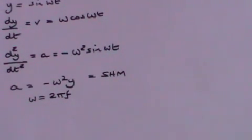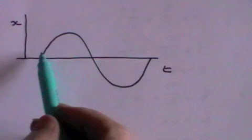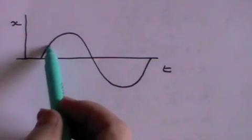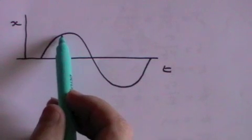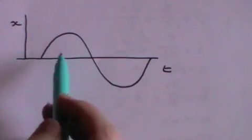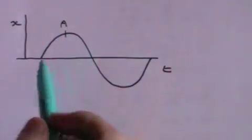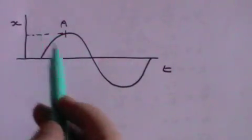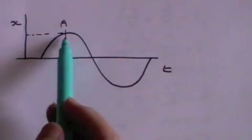Consider one full cycle of a sine wave. As the displacement x increases, the acceleration increases, but in the opposite direction. At point a, x is at a maximum and the acceleration is also at a maximum, but the velocity is zero.